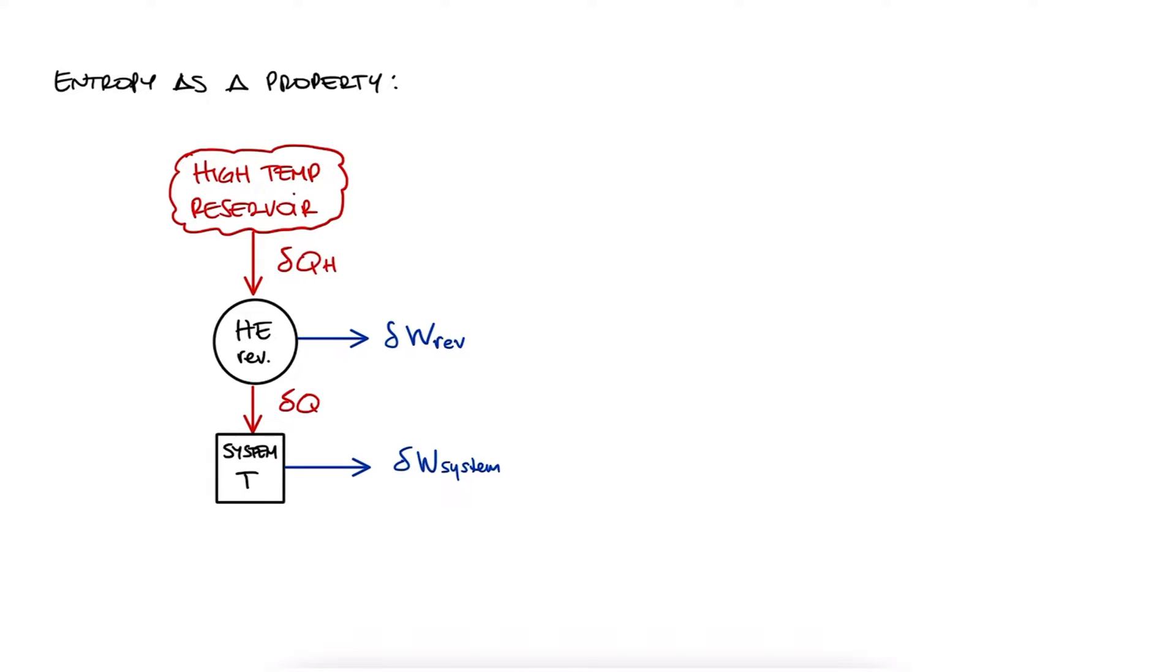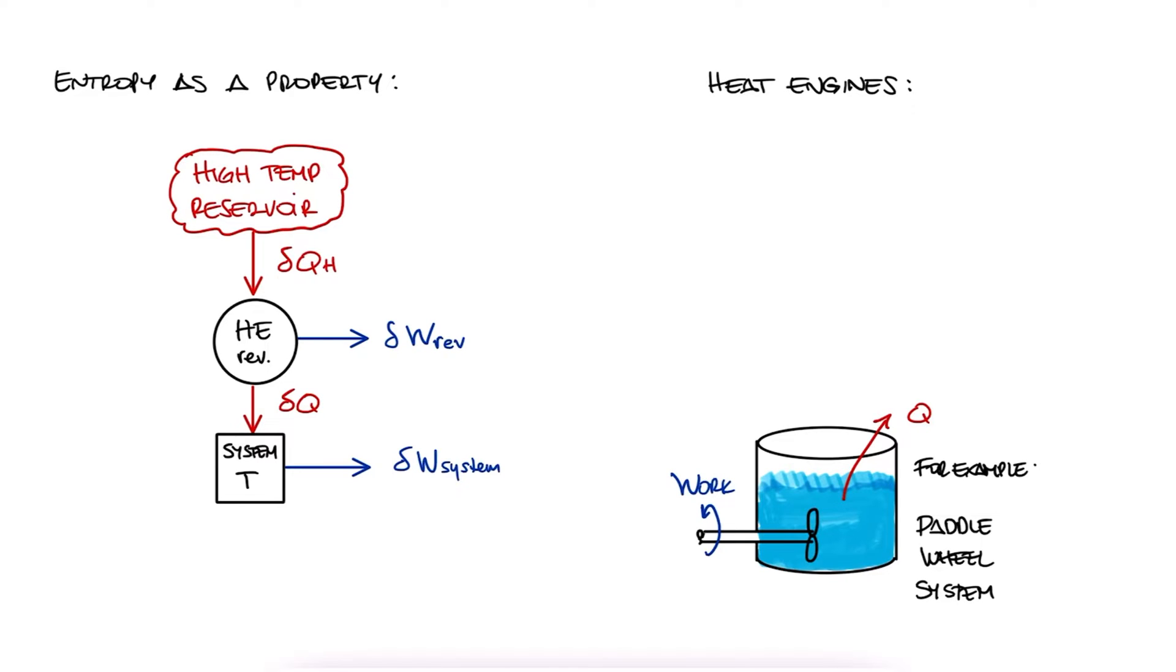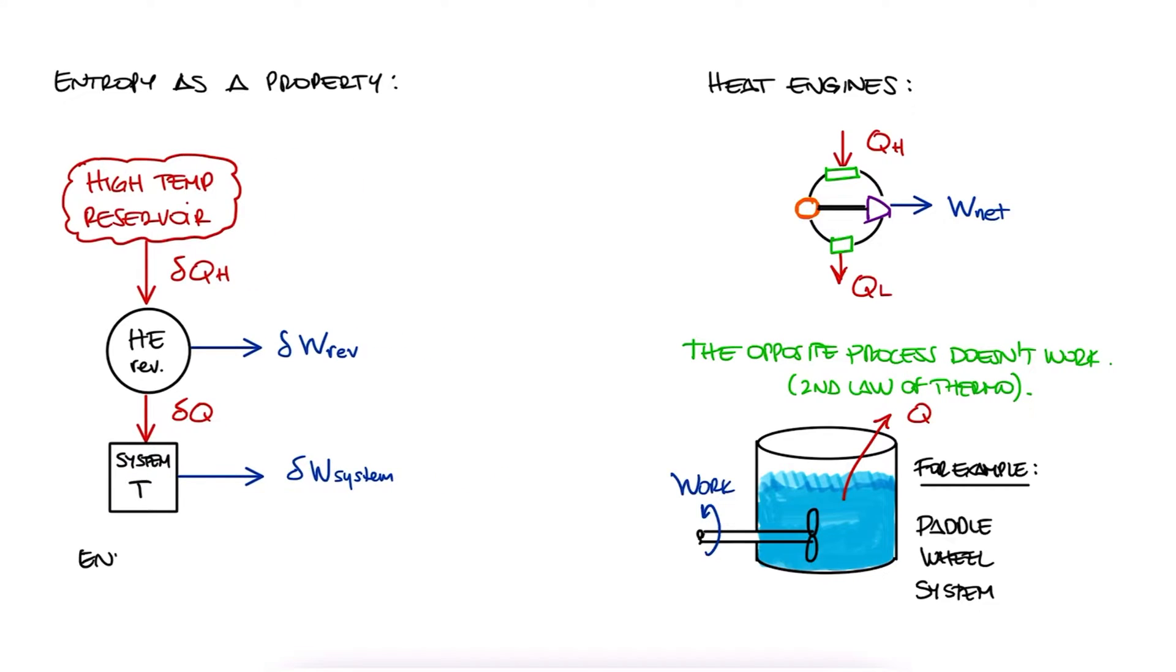Of course, we already know that this system does not exist in the real world. The whole reason we studied heat engines was because we realized that we can add work to generate heat, but we cannot just add heat to produce work. The only way to produce work from heat is by having a more elaborate system like the heat engine. If we write the energy conservation equation for this impossible system, we'd get DE is equal to delta QH minus delta WC, where delta WC is the total work out.